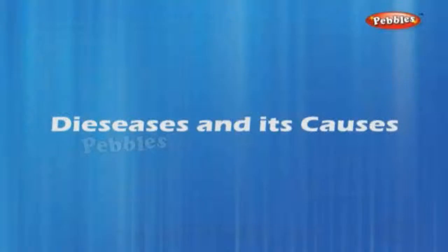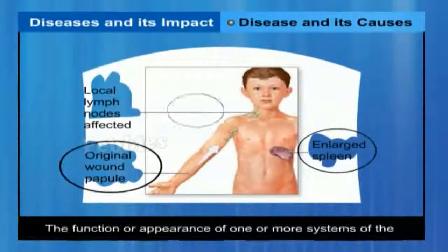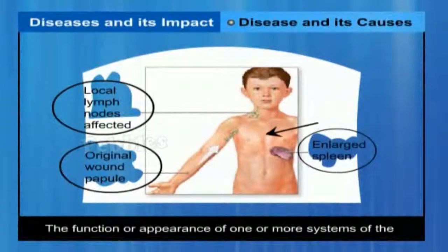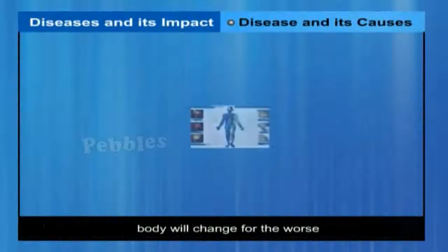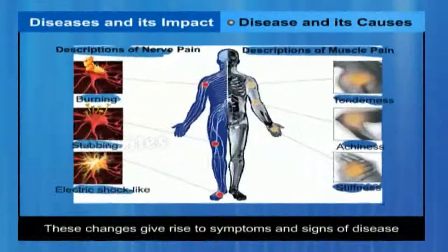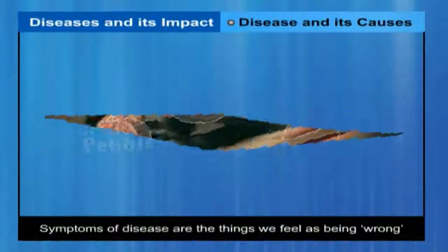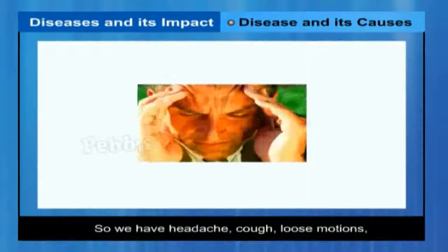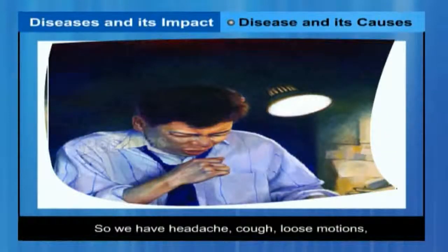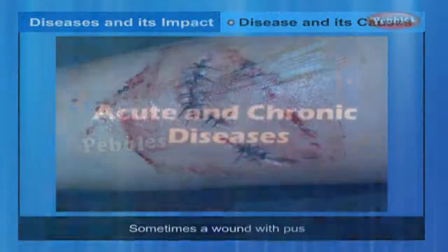Disease and its causes. When there is a disease, either the functioning or appearance of one or most systems of the body will change for the worse. These changes give rise to symptoms and signs of disease. Symptoms of disease are the things we feel as being wrong — we have a headache, we have a cough, we have loose motions, we have a wound with pus. These are all symptoms.